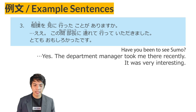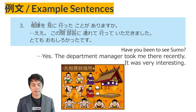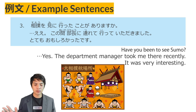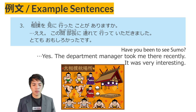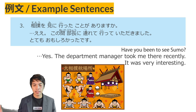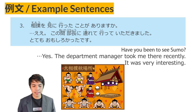Example sentence No. 3: Sumo wo mi ni itta koto ga arimasu ka? — Have you ever been to see sumo? Koto ga arimasu is used to ask about someone's experience. Yes — kono aida bucho ni tsurete itte itadakimashita. My department manager took me. So instead of moraimashita, we use itadakimashita to sound more polite. Totemo omoshiro katta desu. — It was very fun.